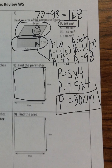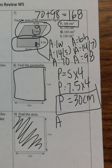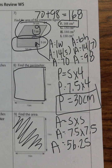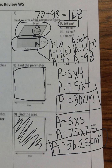Number nine: find the area of the square. Area is how much space it takes up; for a square the formula is side times side. Multiplying 7.5 times 7.5 gives me 56.25 centimeters squared. Congratulations — you have finished the week six spiral! Make sure you watch the video until the end and turn in your corrections to your teacher. See you next week.